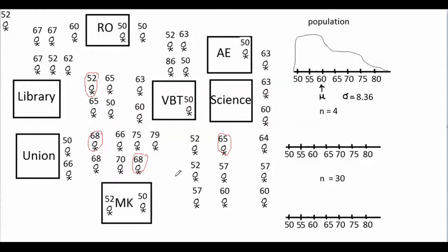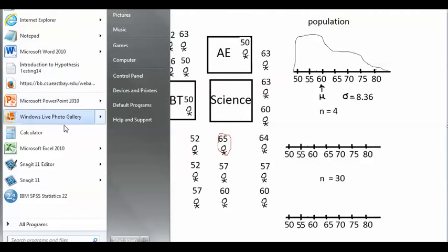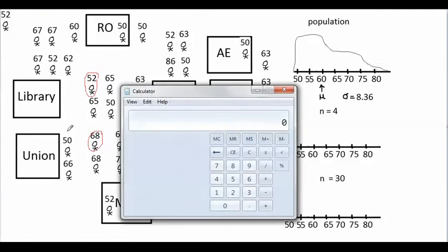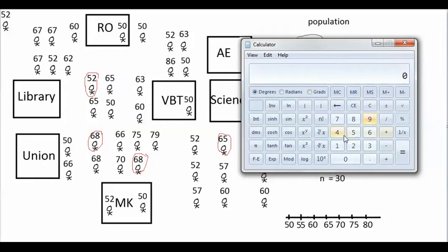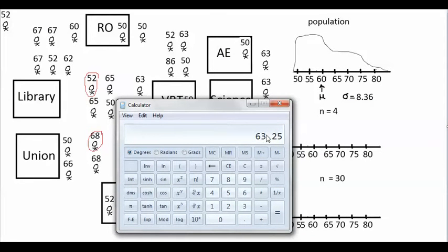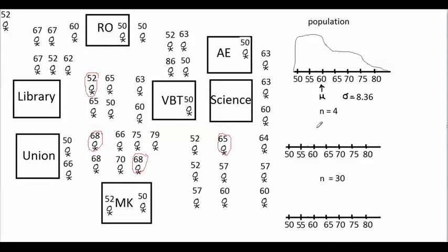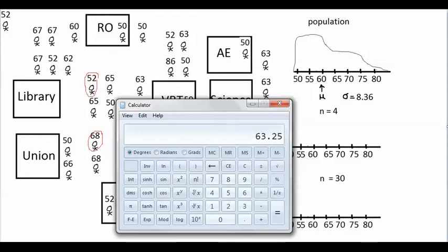So let's actually calculate the mean height of our sample. We have to add these four numbers and divide the total by four. The mean height of our sample is 63.25. So we overestimated the population mean by a little bit, because the mean of our sample is a little above the population mean. In statistics, the symbol for a sample mean is an x with a bar above it — it's called x-bar. Our sample of four people had a sample mean of 63.25.